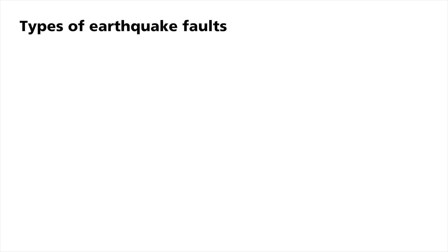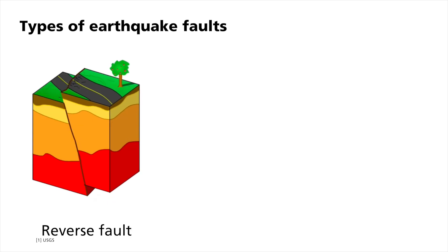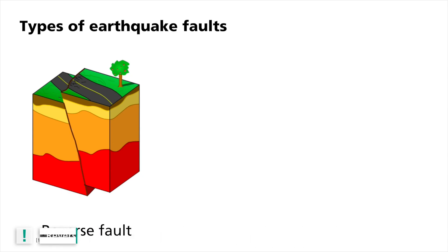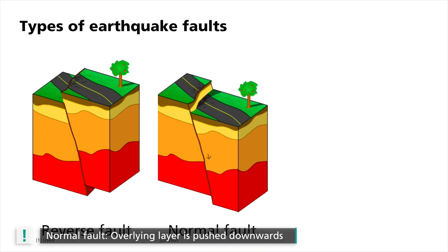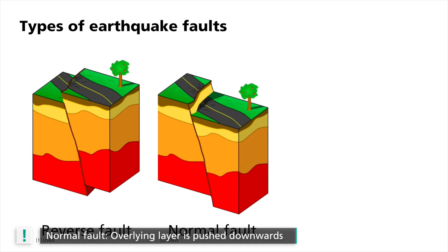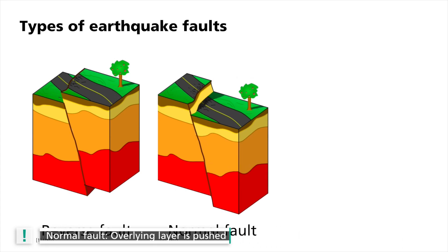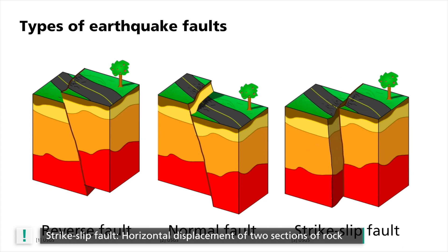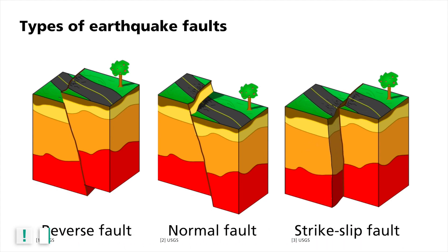These three types are shown in the following. Firstly, a fault like the one we saw in the quarry — we call this a reverse fault. In this case, a section of rock is pushed obliquely upwards relative to another section. Secondly, normal faults occur when a section of rock is pushed downwards relative to another along the fault line. The third type describes horizontal displacement of two sections of rock. These are called strike-slip faults.